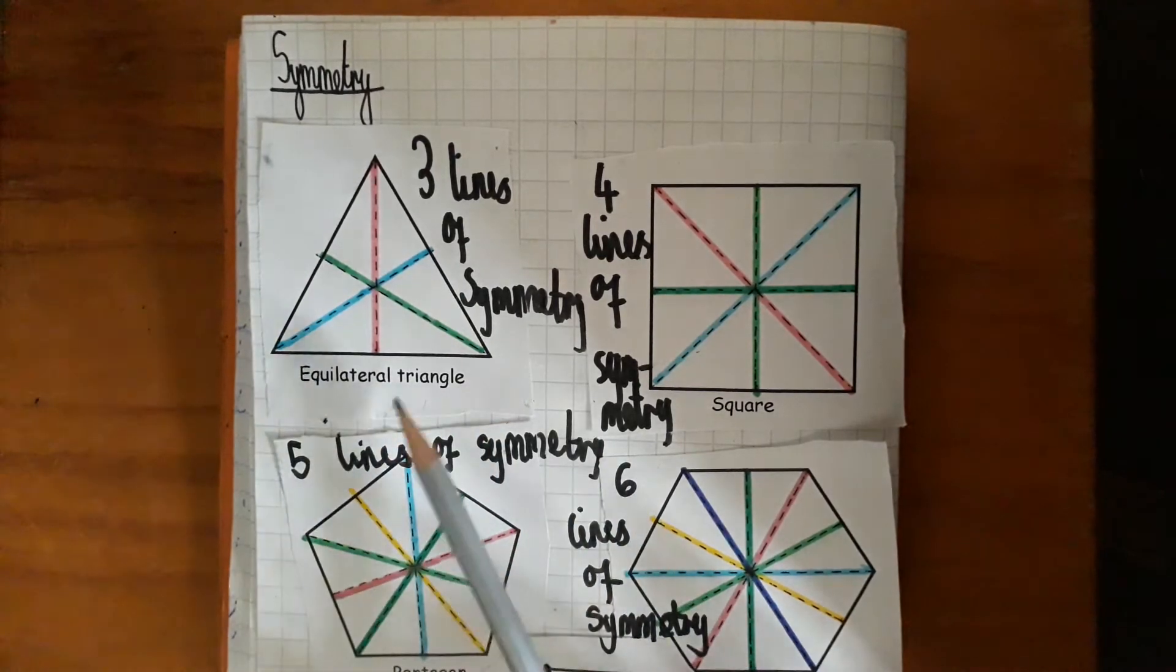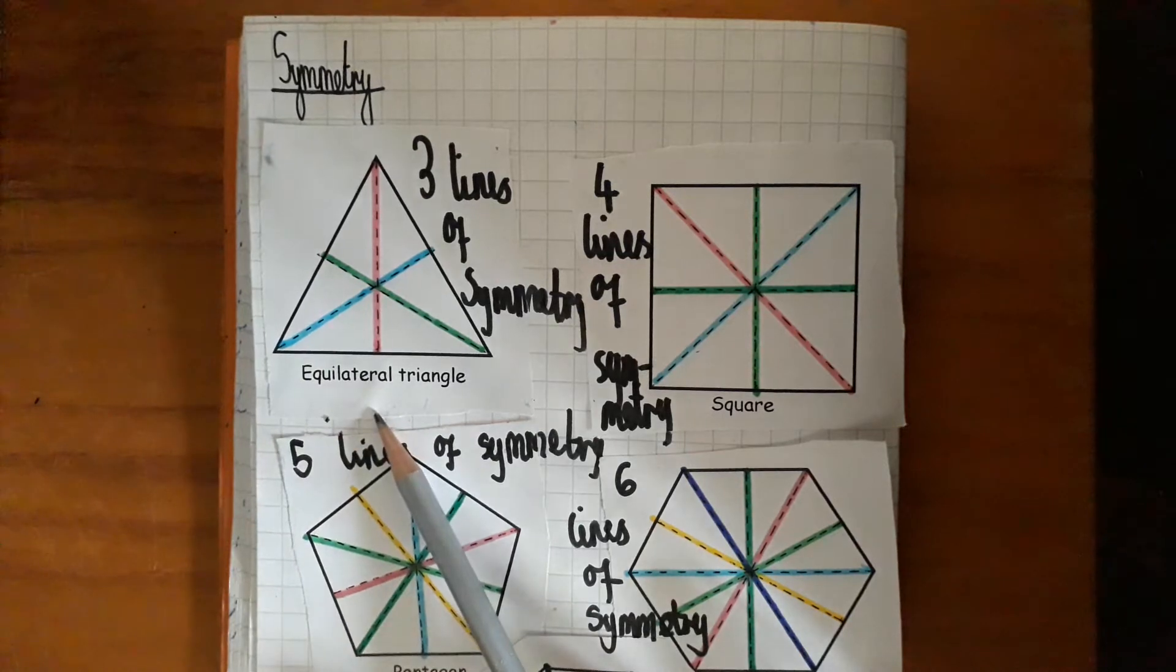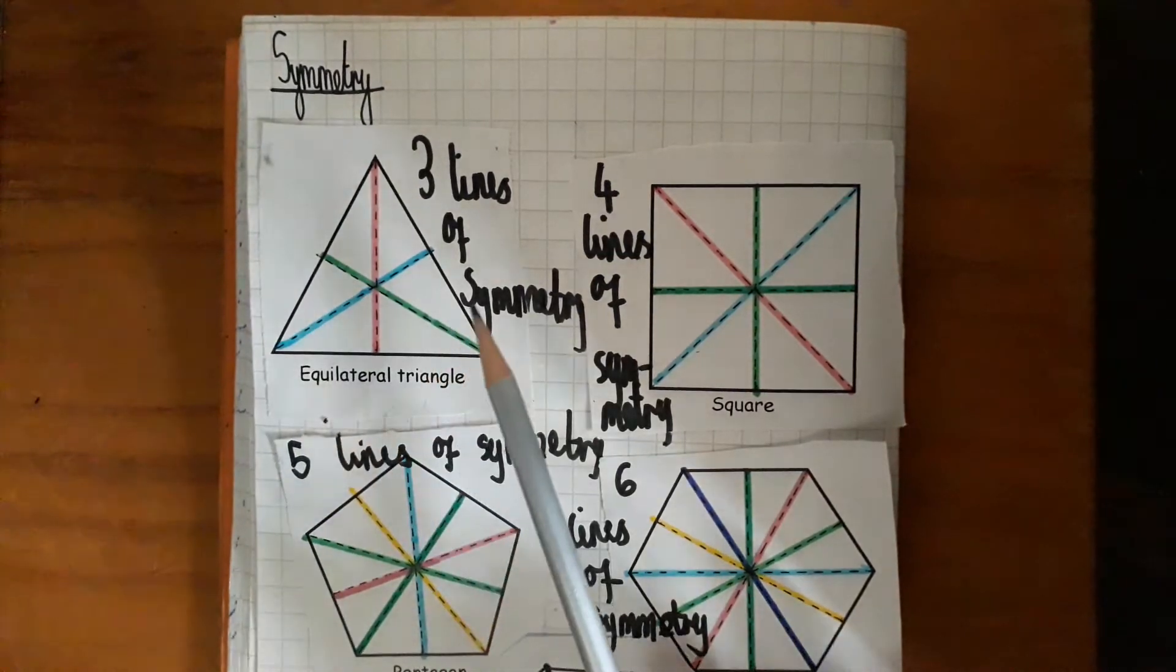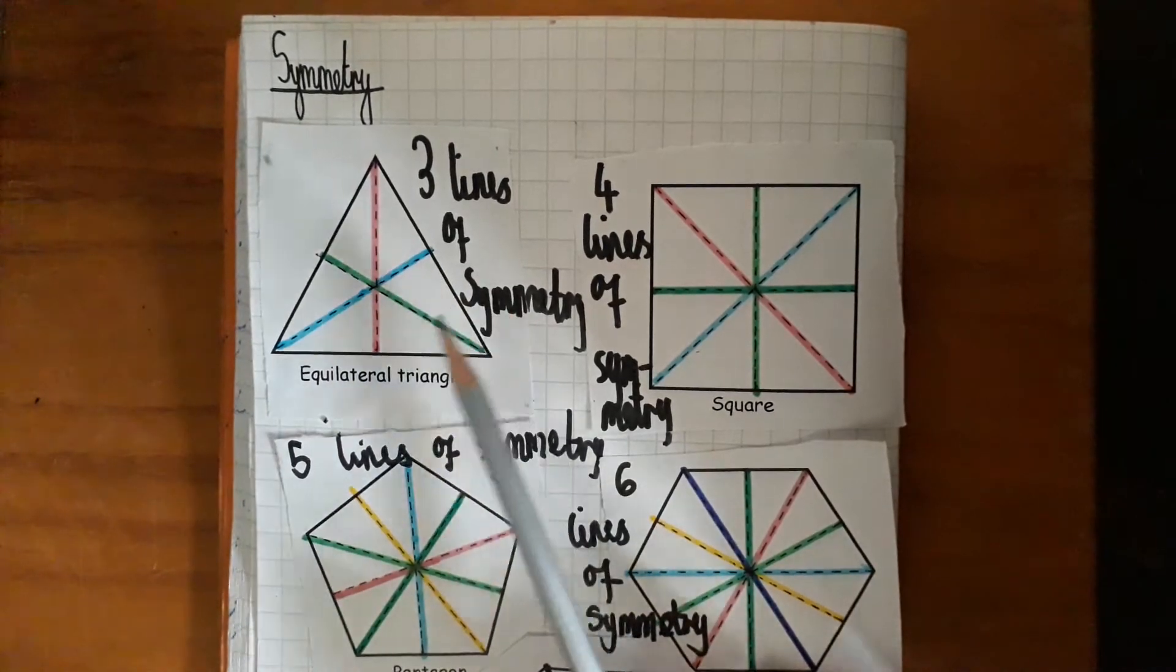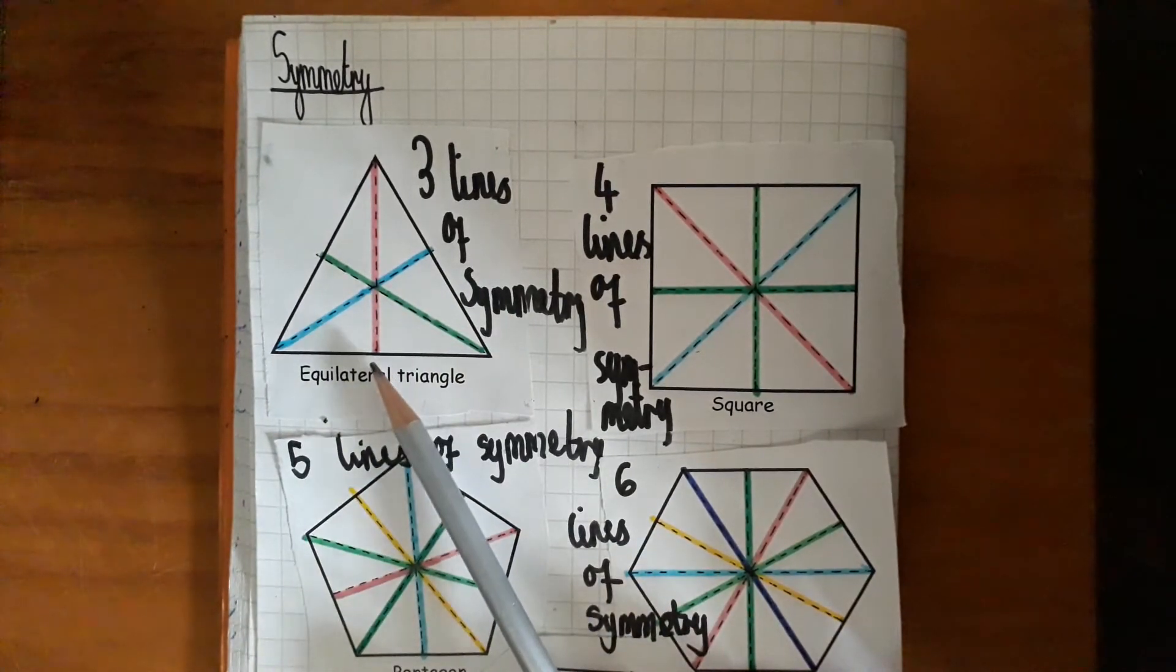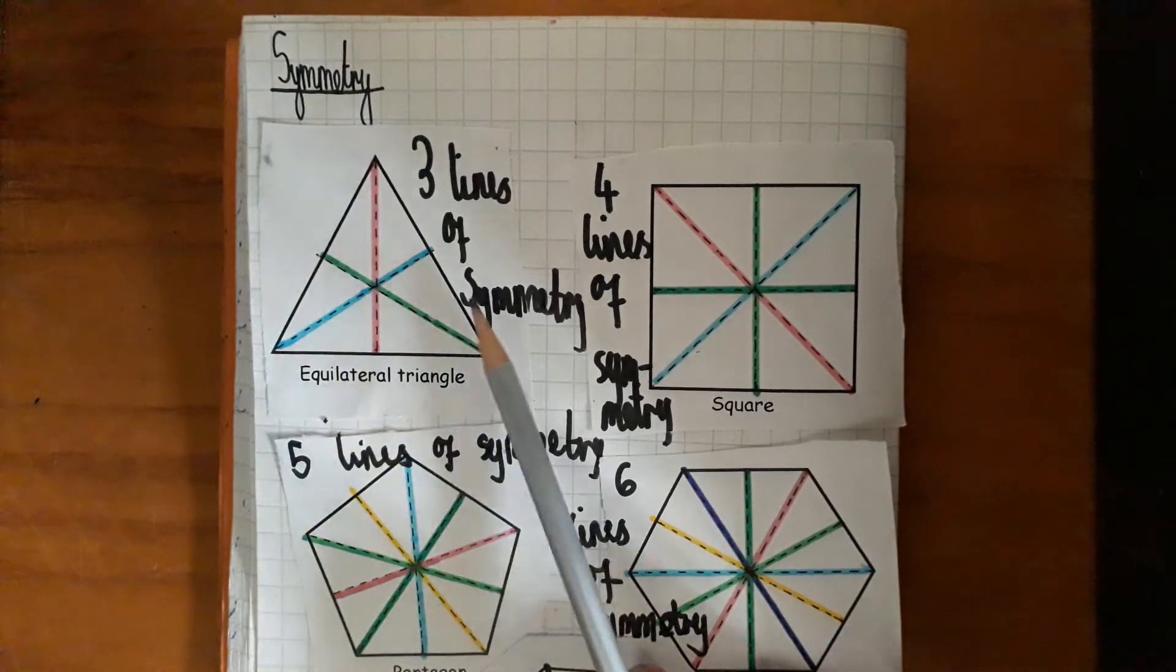It helps if you do it in different colors, okay, and label the number of lines of symmetry so you can see the relationship between the number of sides of a regular shape and the number of lines of symmetry.